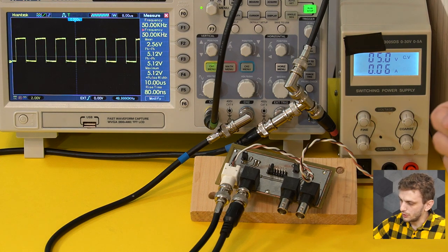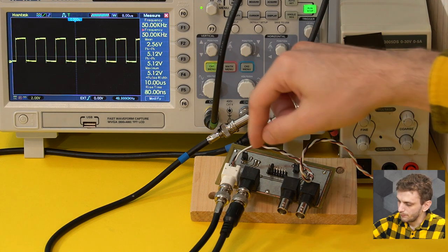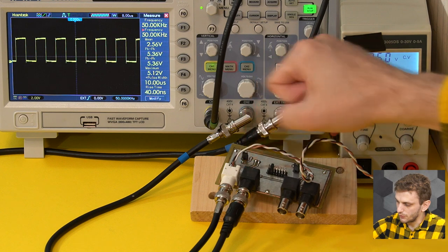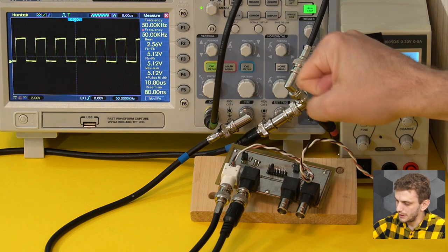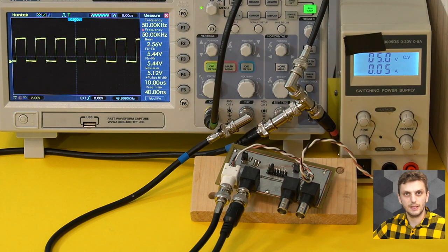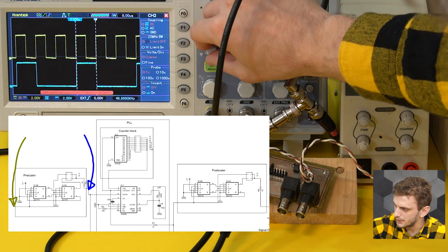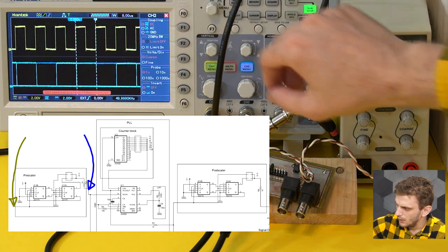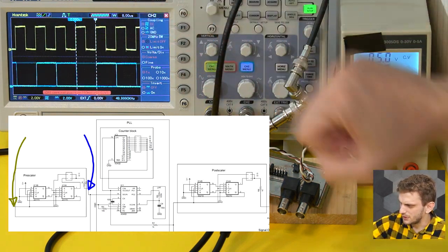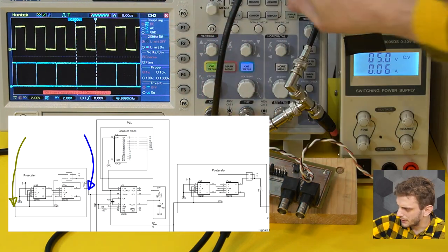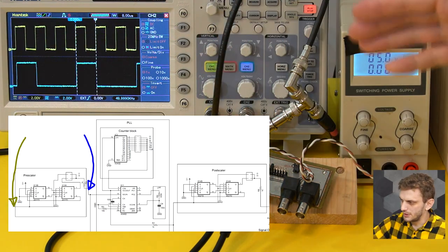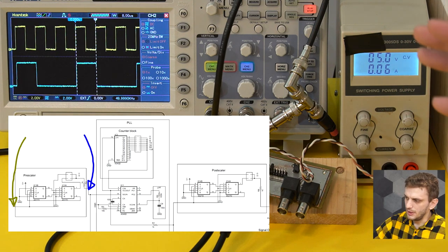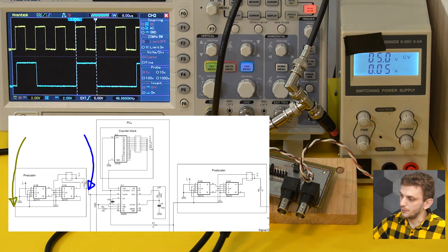The first block to look at is the pre-scaler. If I quickly activate this and select a single capture, we see our division by three in action.